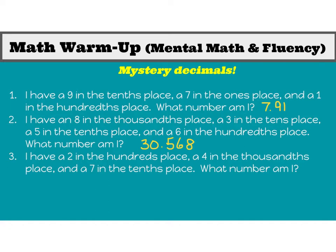Let's take a look at number three. I have a two in the hundreds place, a four in the thousandths place, and a seven in the tenths place. What number am I? Pause your video. The answer is two zero zero, decimal point, seven zero four — or two hundred and seven hundred four thousandths.